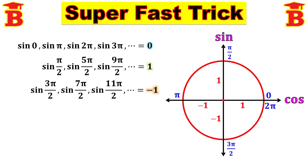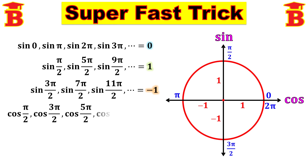Next, we write the cos values. Cos values exist only for the horizontal line. Cos of vertical angles equals 0 — that is, cos(pi/2) = 0, cos(3pi/2) = 0, etc.